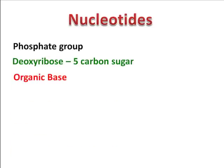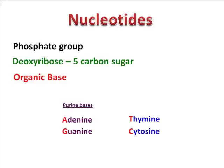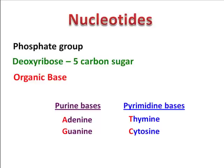The organic bases are adenine, thymine, guanine, and cytosine — usually shortened to A, T, G, and C. Adenine and guanine are purine bases, which means they have two rings in their structure. Thymine and cytosine are pyrimidine bases, as they only have one ring in their structure.